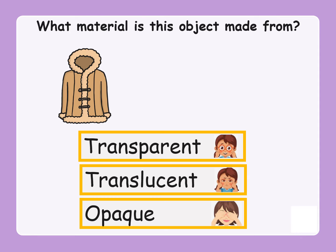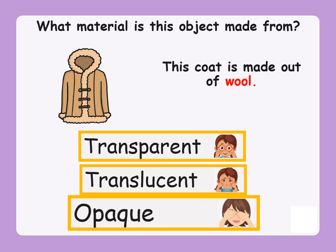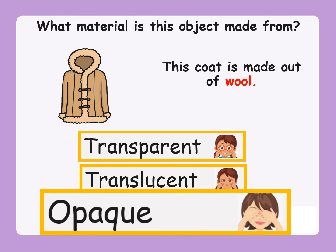What material is this object made from? We have a coat. This coat is made out of wool. I want you to think about the material wool — is wool transparent, does it let light through? Is it translucent, does it let a little bit of light through? Or is it opaque, does it not let light through? If you said opaque, you are correct. Wool is an opaque material, which means that it does not let light through. That is why we can make coats out of wool, because it can keep you nice and warm and it will not let light through it.